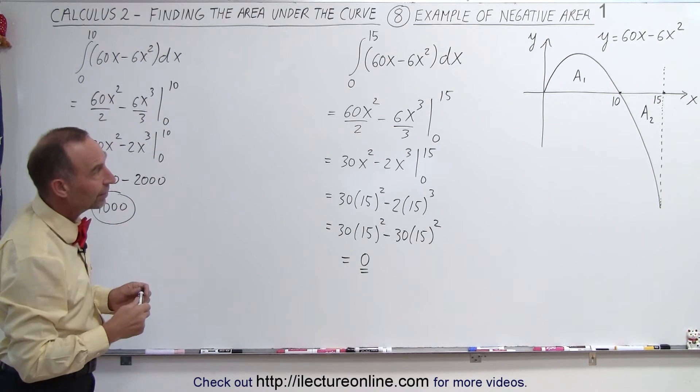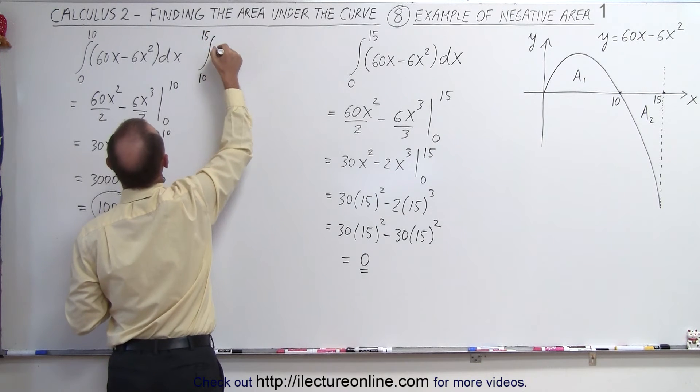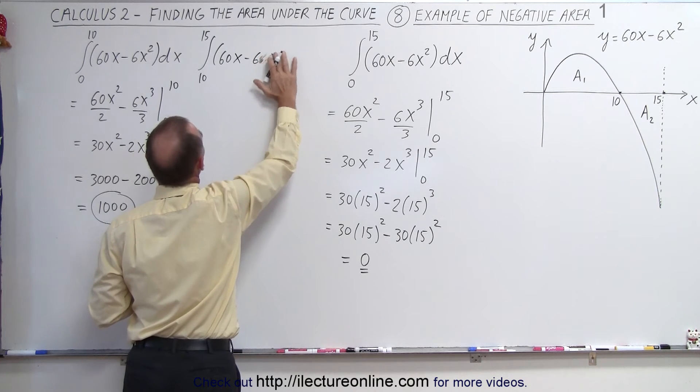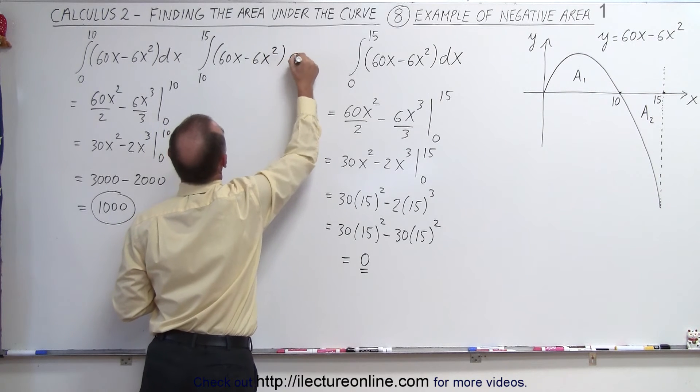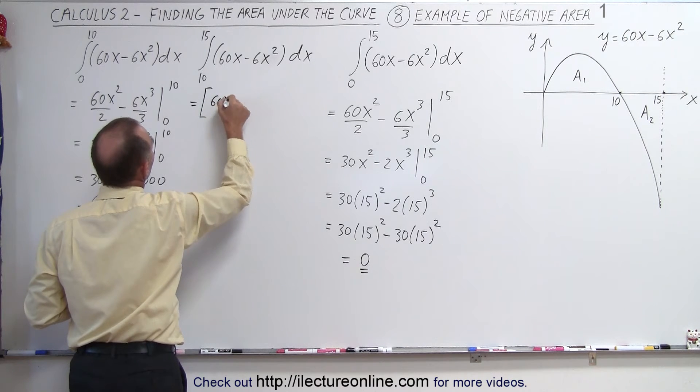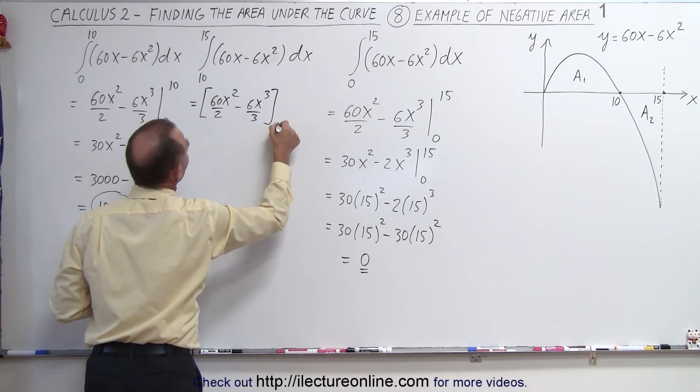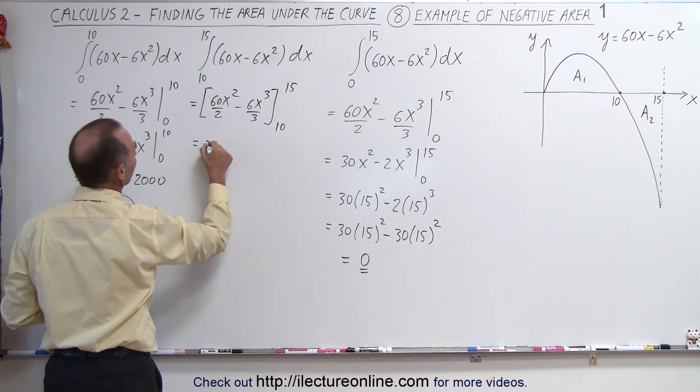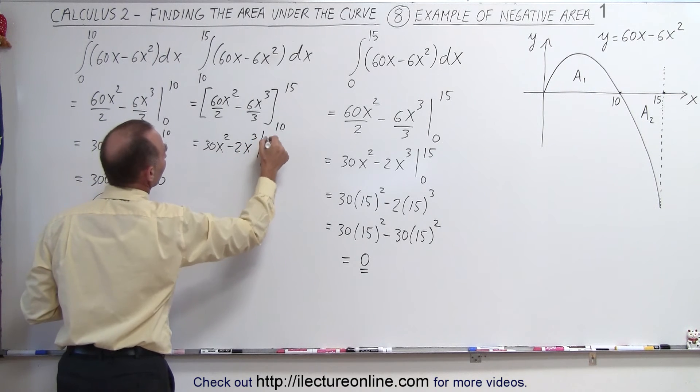Let's see what we get when we integrate the second one. So now we're going to integrate from 10 to 15 the same integral, 60x minus 6x² times dx. And again, by now you realize that this is equal to 60x² over 2 minus 6x³ over 3. I'm going from 10 to 15 this time. And so this is equal to 30x² minus 2x³ evaluated from 10 to 15.